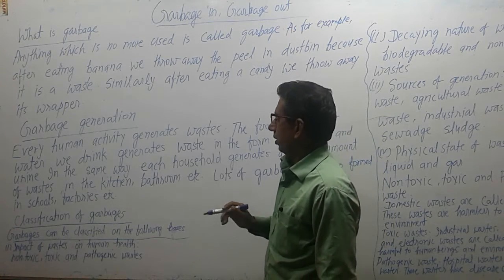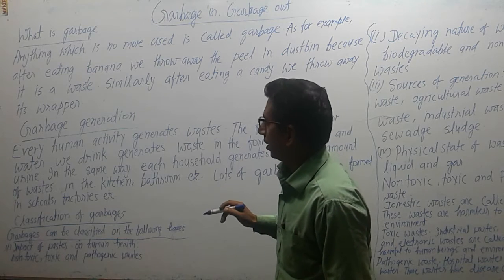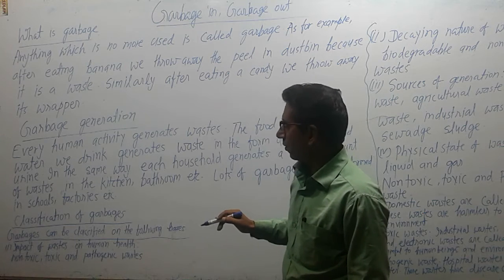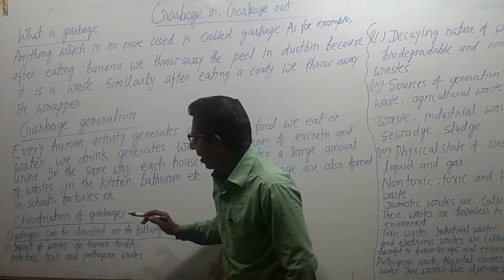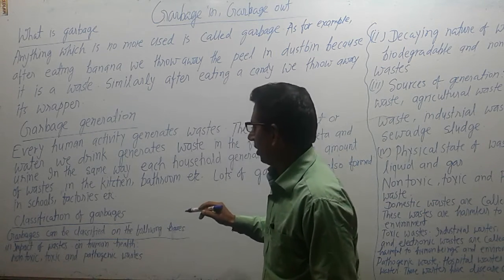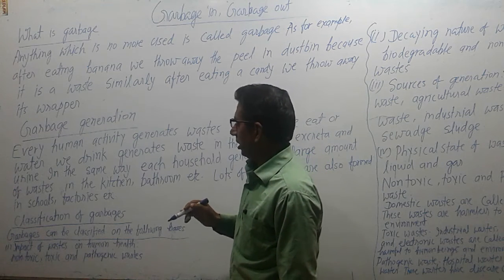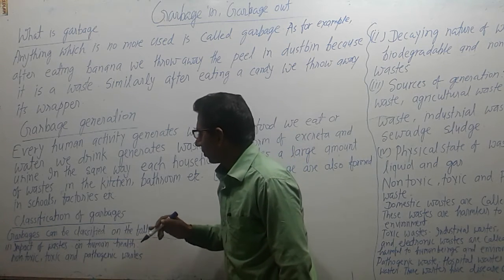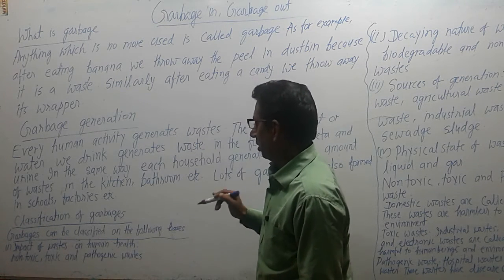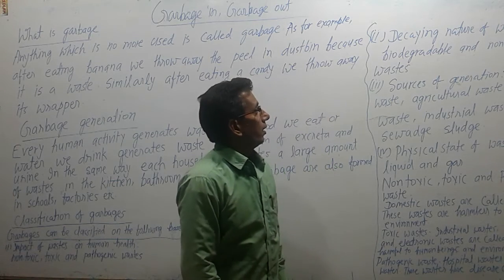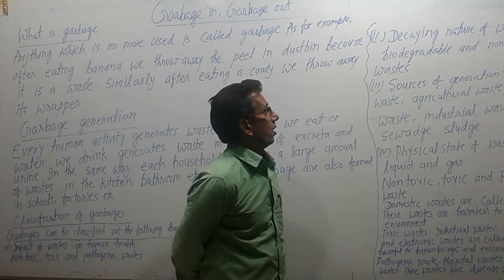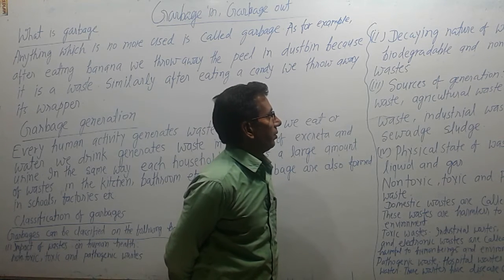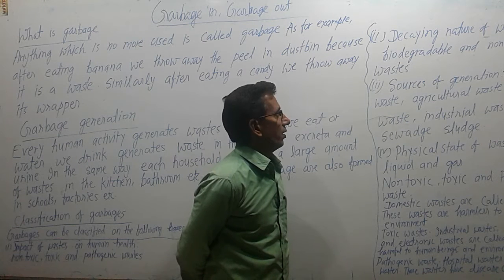Now, we have to know the classification of garbage. Garbage can be classified on the following bases. The first basis is the impact of waste on human health. On this basis, there are three types of garbage or waste: non-toxic waste, toxic waste, and pathogenic waste. The second basis is the decaying nature of waste. On this basis, there are two types of waste: biodegradable waste and non-biodegradable waste.